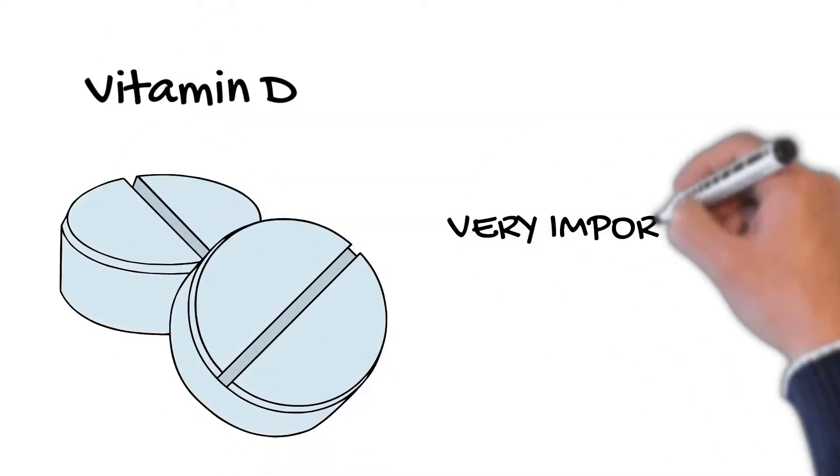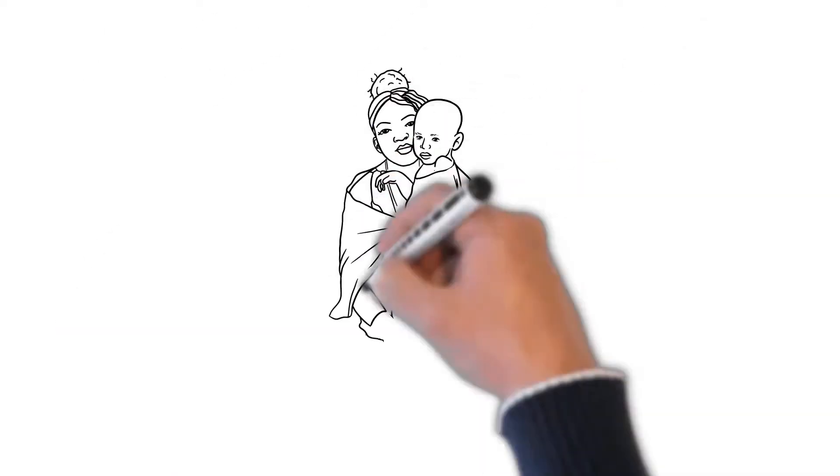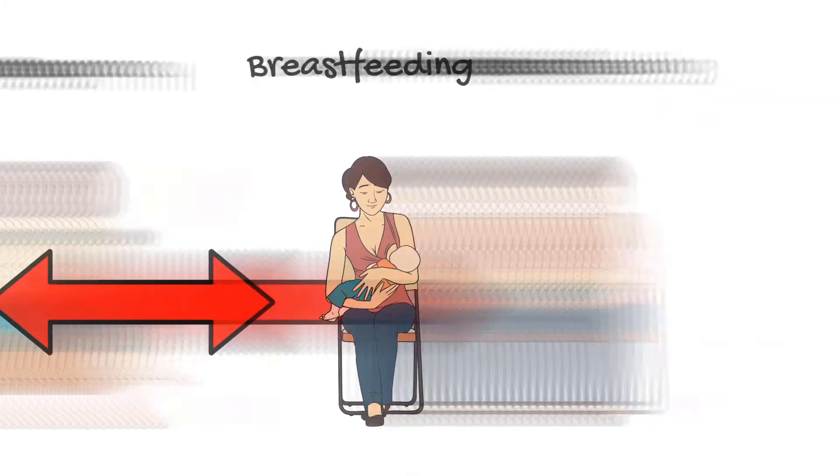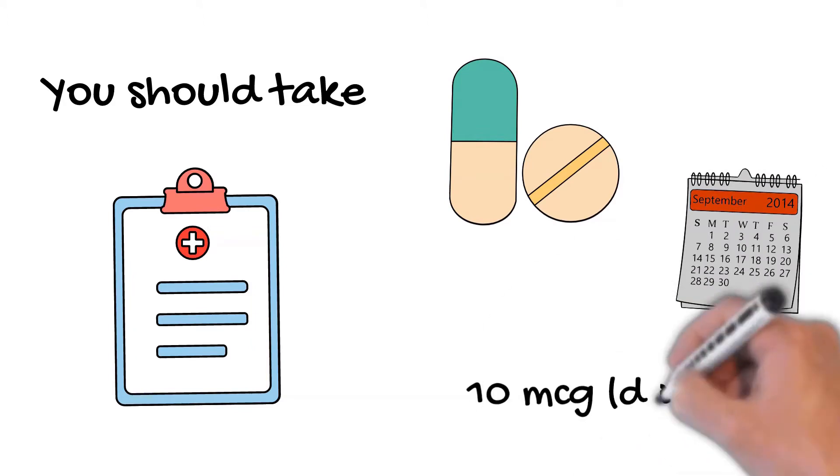Vitamin D is very important for the development of bones and the immune system of pregnant women and their babies. So during pregnancy and breastfeeding, you should take at least 10 micrograms of vitamin D every day.